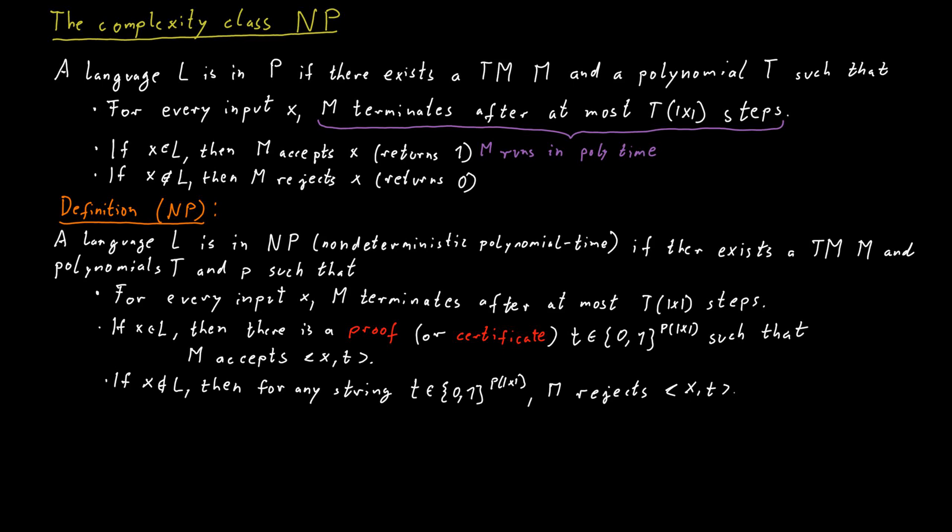We would like to know what the relationship is between the complexity class P and the complexity class NP. And this is in fact very easy to see. The complexity class P has to be contained in the complexity class NP. This is because, consider a language in P. Now, by definition, there exists some polynomial time Turing machine that decides that language X.